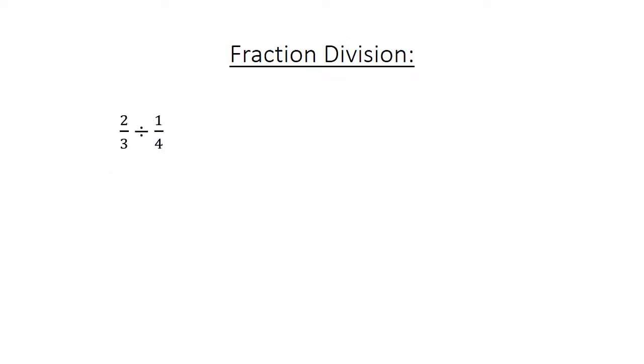Fraction division. 2 over 3 divided by 1 over 4 equals 2 over 3 times 4 over 1 equals 8 over 3 equals 2 and 2 over 3.